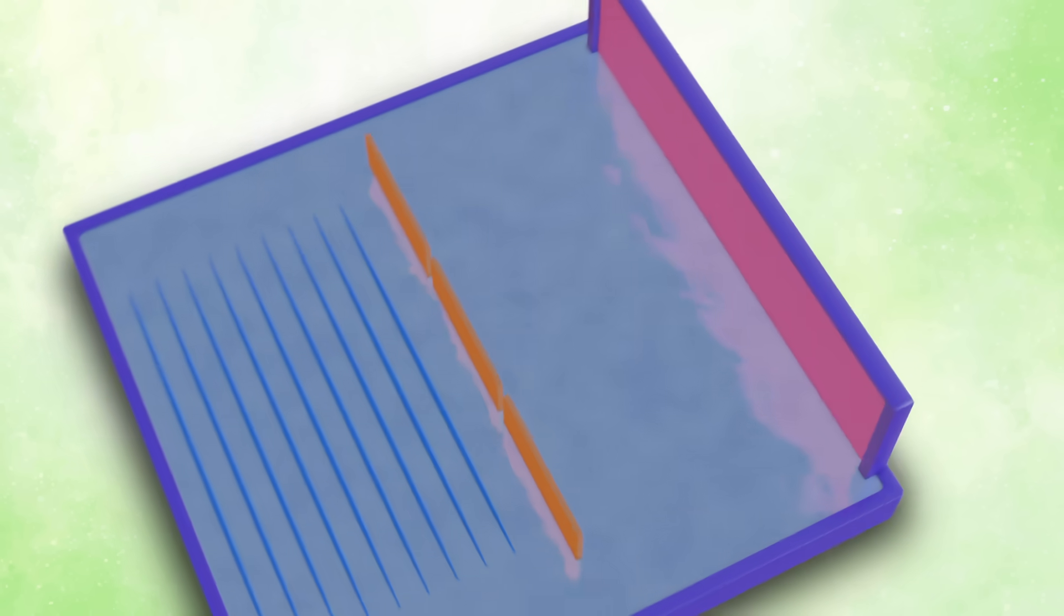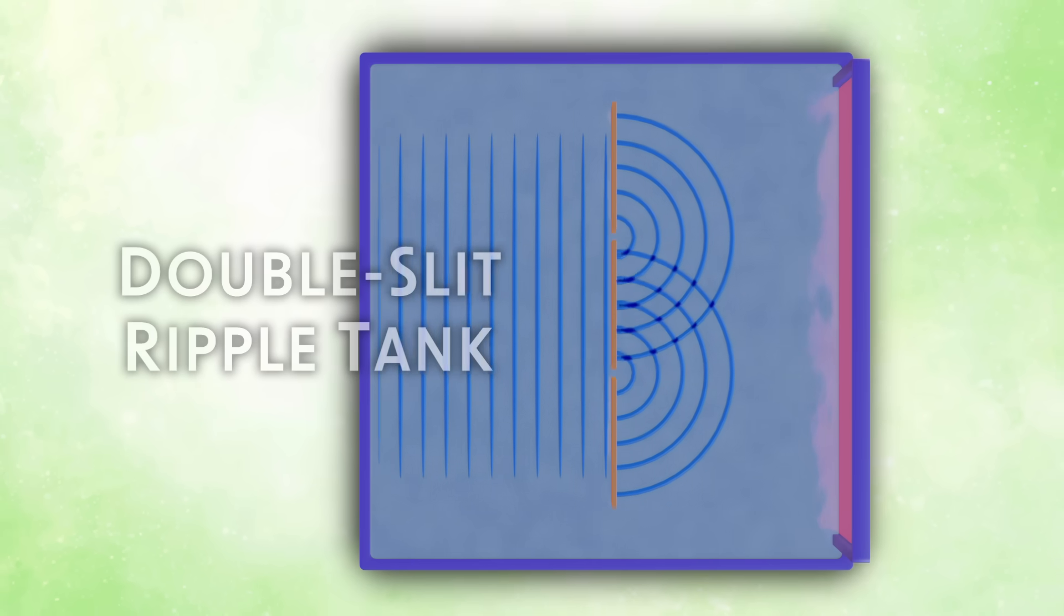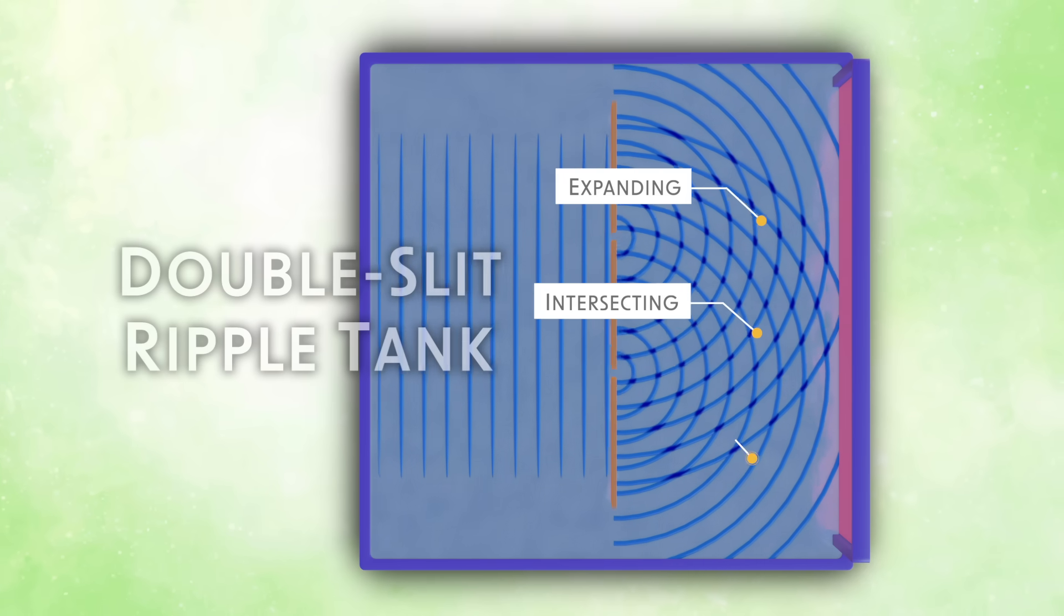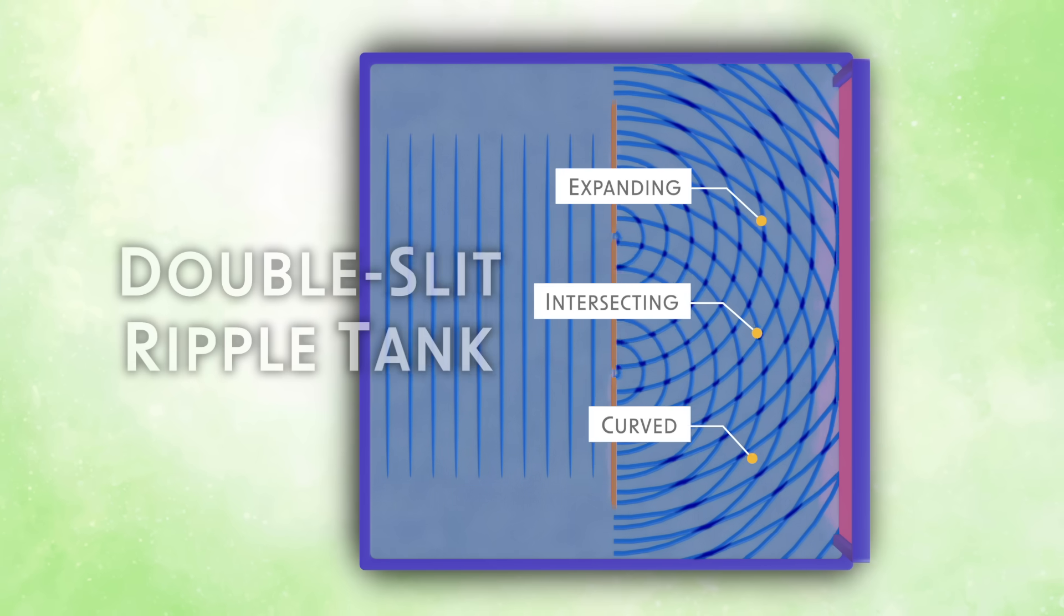In this typical Young setup, three barriers form two narrow slits. Waves exit each slit as expanding, intersecting, curved waves. Where wave peaks intersect, they combine to form higher waves.